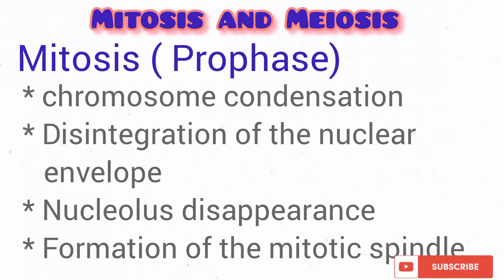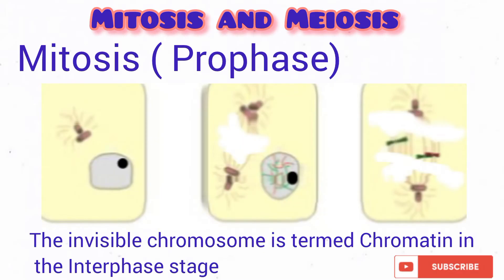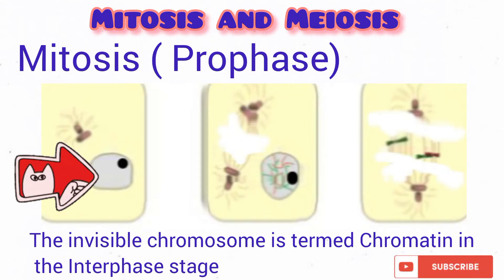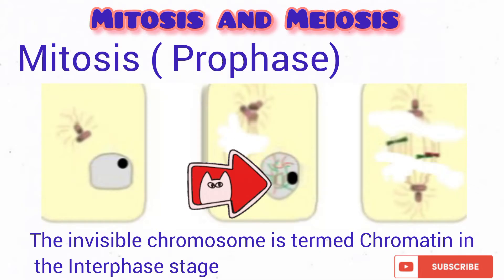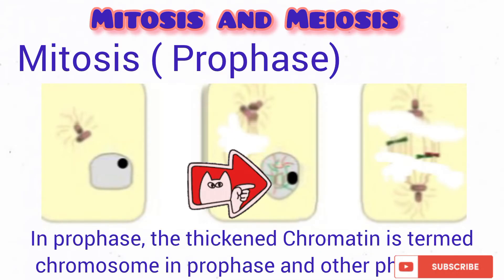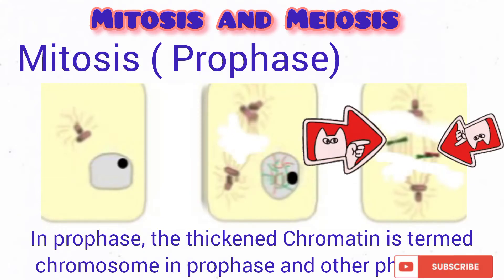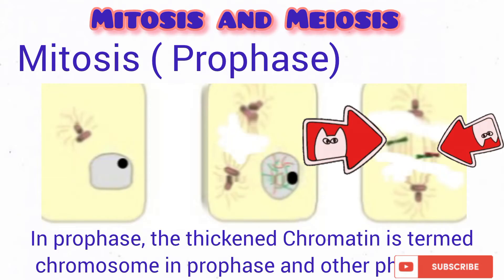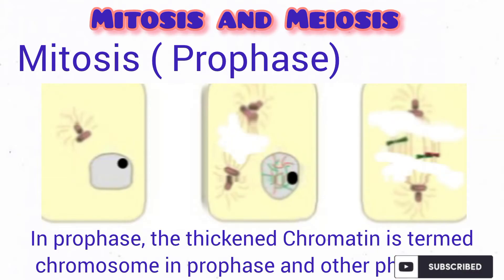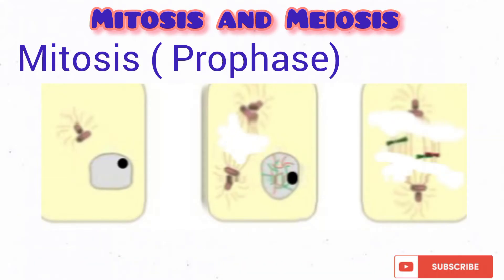Take a look at the nucleus during the interphase stage — the chromosomes present are virtually invisible even with the aid of a microscope. But at the early phase of prophase, they start getting thickened and shorter. At the late prophase stage, they are very thick and short. This process of chromosomes getting thickened and short is termed chromosome condensation.